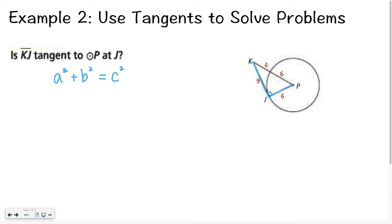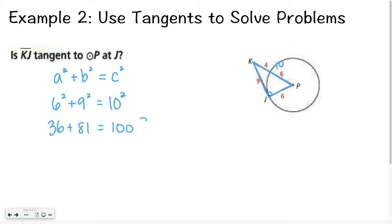However, if A squared plus B squared is not equal to C squared, that means segment KJ is not tangent to circle P at point J. So I'm going to take 6 squared plus 9 squared and ask: is that equal to my entire hypotenuse? The hypotenuse is 4 plus 6, which is 10, so that would be 10 squared. Is 36 plus 81 equal to 100? No — therefore, it is not tangent to the circle.